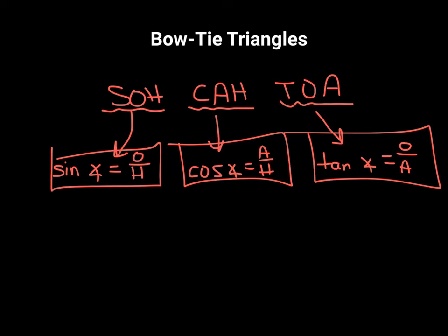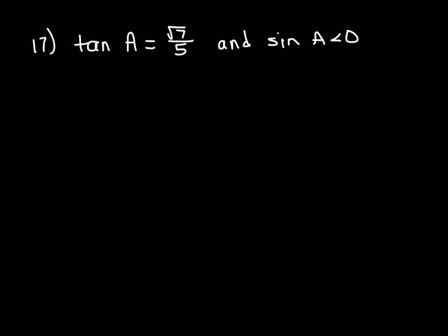I'm going to choose about three examples to do with you, and then the rest you'll do on your own for homework. I'm going to skip over 16 and start with 17. It gives us two things: tan of A equals radical 7 over 5 — A just stands for our angle — and sine of our angle is less than zero.